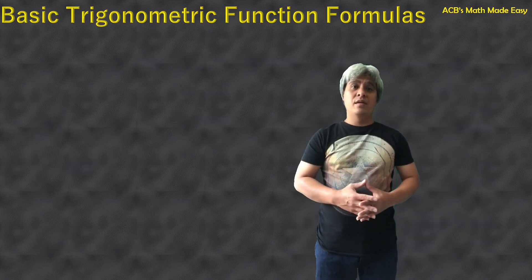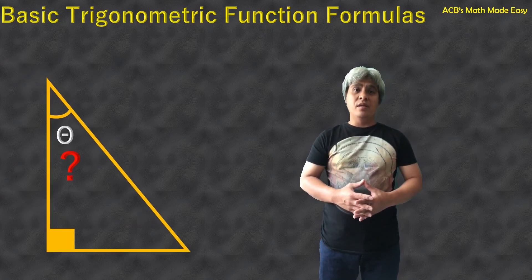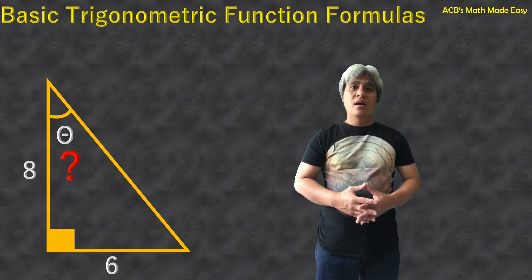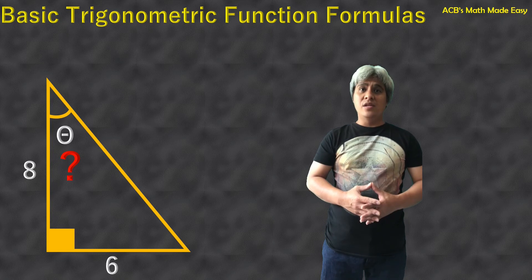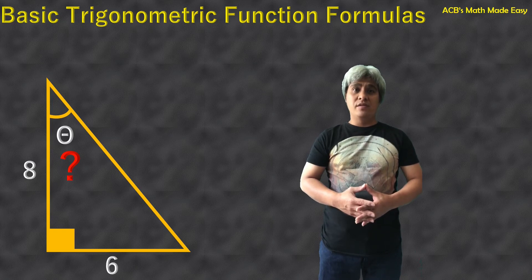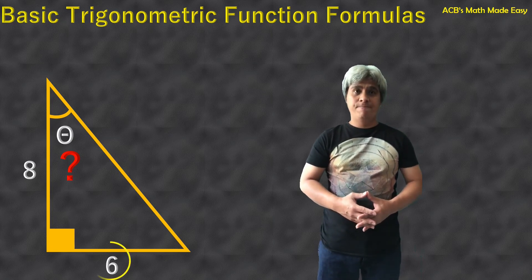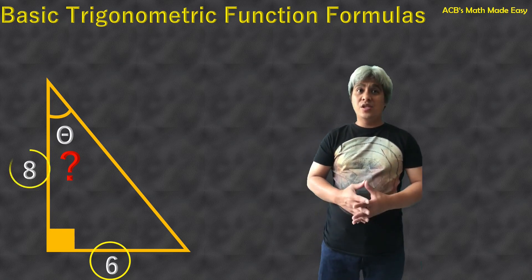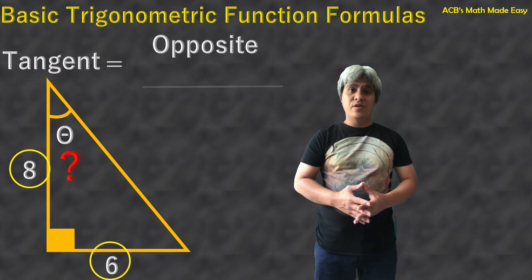This is the right triangle, and we are going to calculate the angle theta. The adjacent of the right triangle is 8 units, and the opposite of the angle theta is 6 units. How are we going to get this angle? What is the trigonometric function formula that deals with adjacent and opposite? Tangent deals with adjacent and opposite, so tangent is equal to opposite over adjacent.